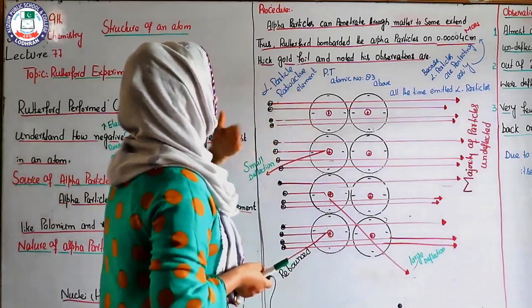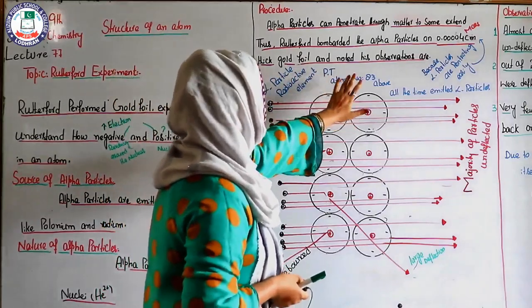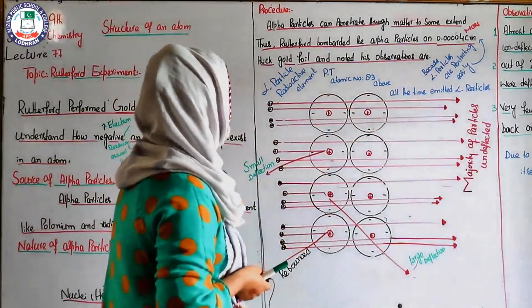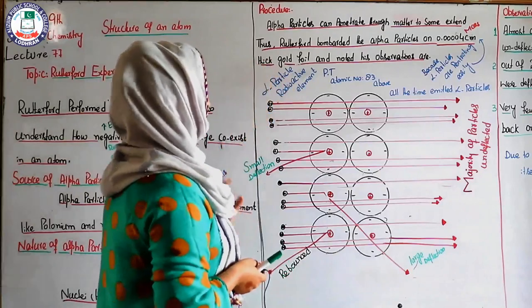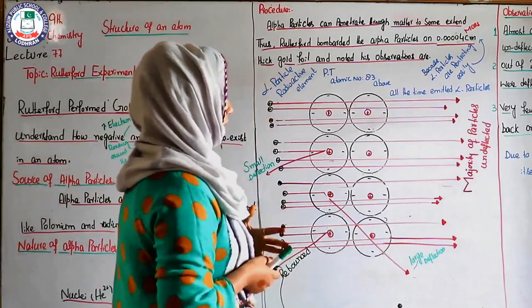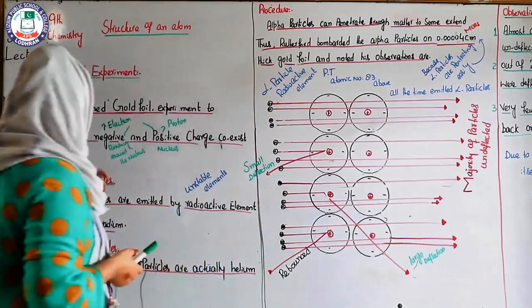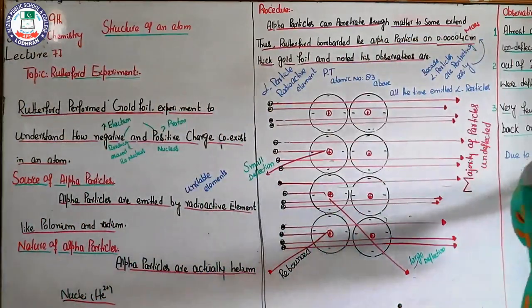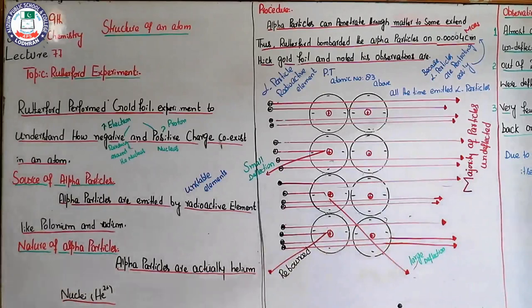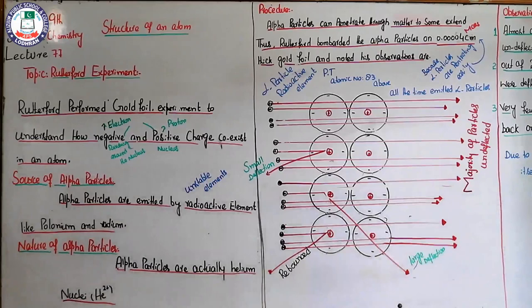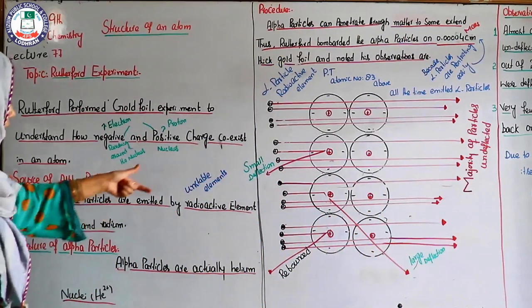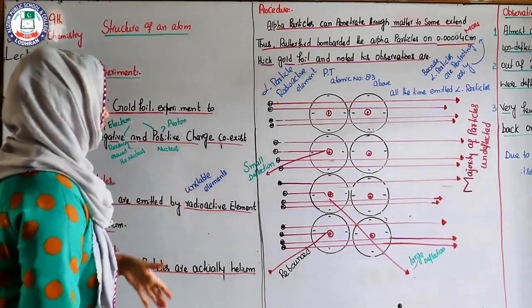In other words, we can say that elements in the periodic table whose atomic number is above 83 — like 84, 85, 86, and so on — are called radioactive elements. You must remember this. Radioactive elements emit alpha particles all the time. The alpha particles here will come from polonium and radium. Due to the emission from radioactive elements, they continuously emit and generate new elements.